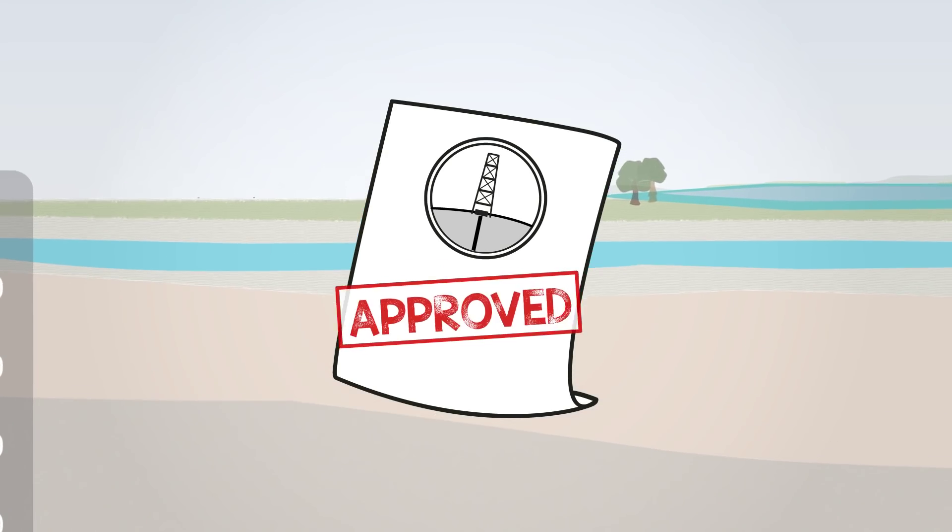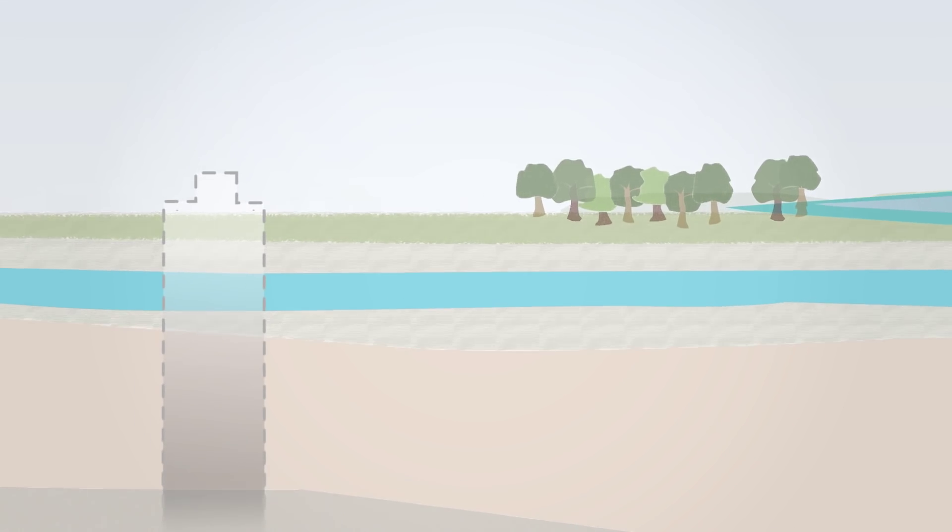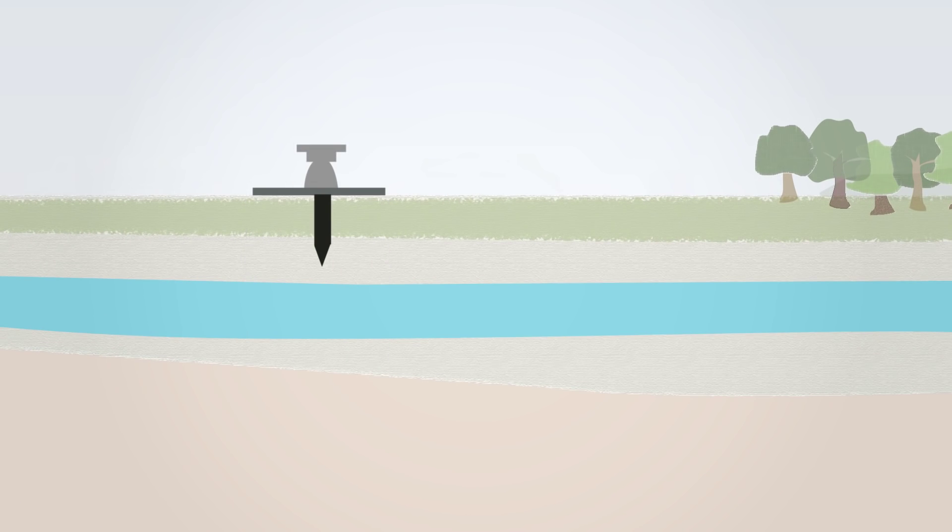Once the proper permits are approved and the site is prepared, the first step is drilling the well. A steel casing that lines the vertical surfaces of the hole is designed to protect underground sources of drinking water. It is common to extend this casing several hundred feet below any aquifers.